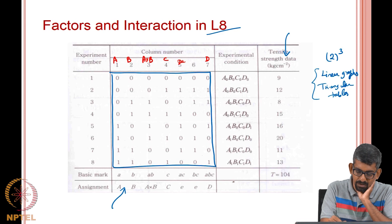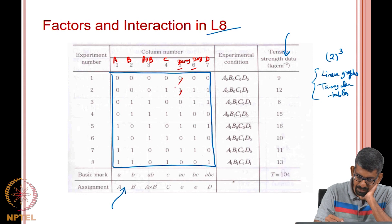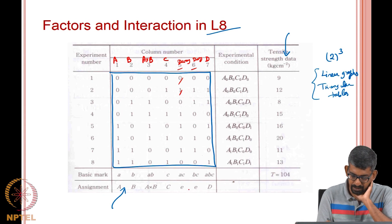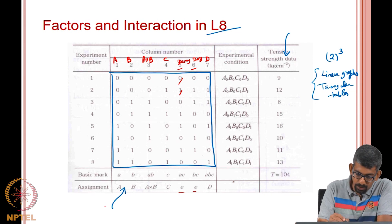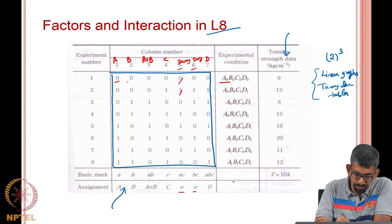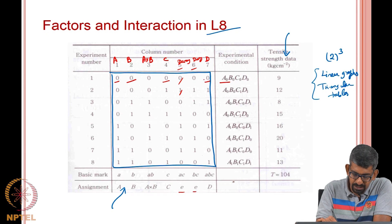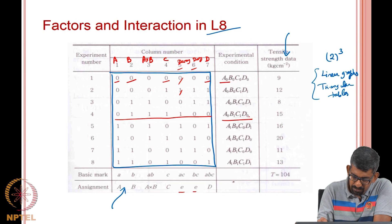These two we will call as dummy. These guys are dummy meaning they will exist, but they do not mean anything. So, what does this mean? It says A takes a level of 0, B takes a level of 0, C takes a level of 0 and D takes a level of 0. Let us take this guy for instance, A takes a level of 0, B takes a level of 1, C takes a level of 1 and D takes a level of 0, this is what it is.